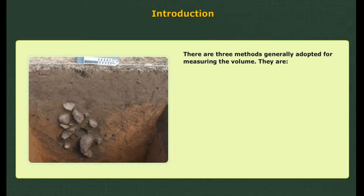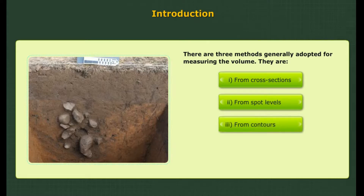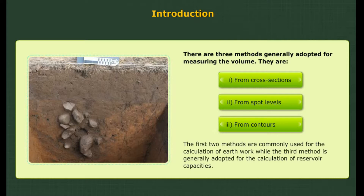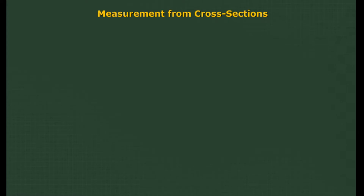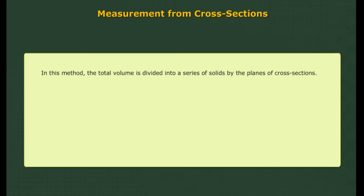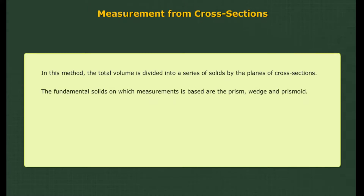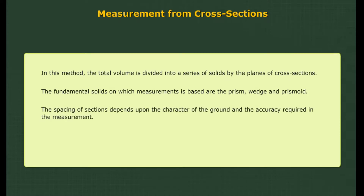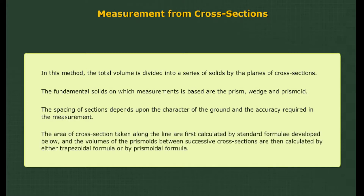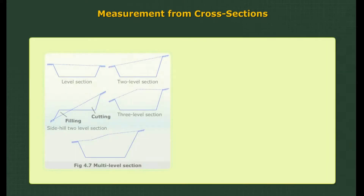There are three methods generally adopted for measuring the volume: 1. From cross sections, 2. From spot levels, 3. From contours. The spacing of sections depends upon the character of the ground and the accuracy required. The area of each cross section is first calculated by standard formulae, and the volumes of the prismoids between successive cross sections are then calculated by either trapezoidal formulae or prismoidal formulae.